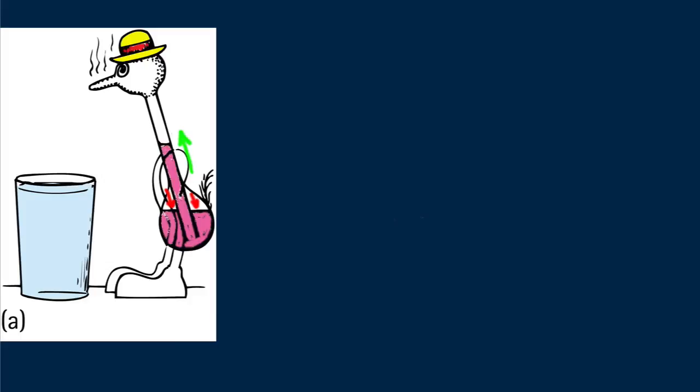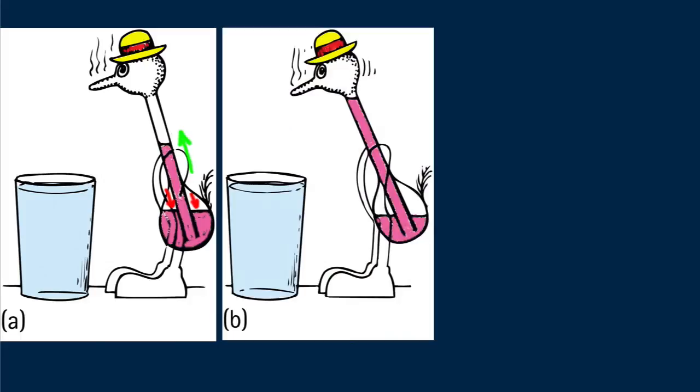This lowered temperature produces condensation of vapor in the head, which decreases vapor pressure there relative to the vapor pressure in the warmer body below. The slightly greater pressure in the warmer lower body pushes liquid up the tube toward the region of reduced pressure.